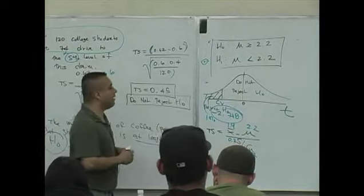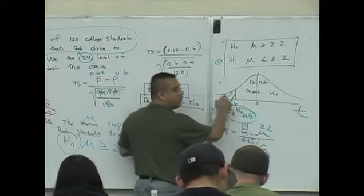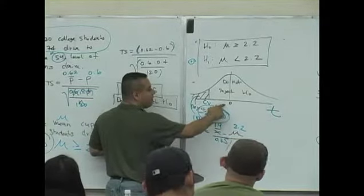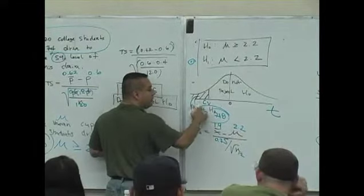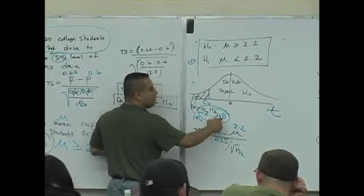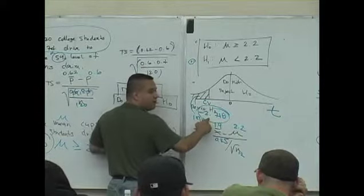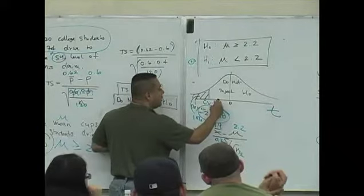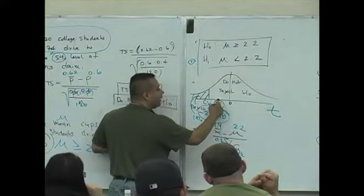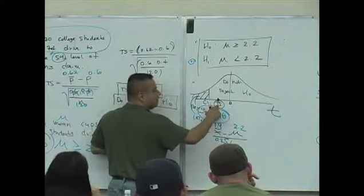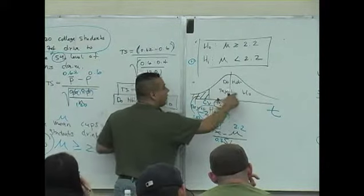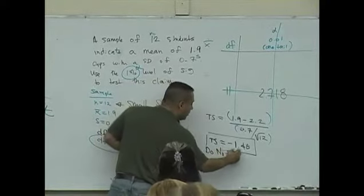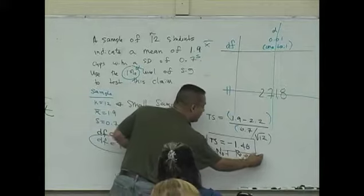So here's the deal. We have to see where that value lives in this decision rule. Zero is here. Negative values are to the left. The critical value is negative 2.718. The question is, where does that test statistic live in relation to that critical value? It's going to be to the right. As long as I know the test statistic is to the right, it's in the do not reject the null region, meaning the conclusion is to do not reject the null.